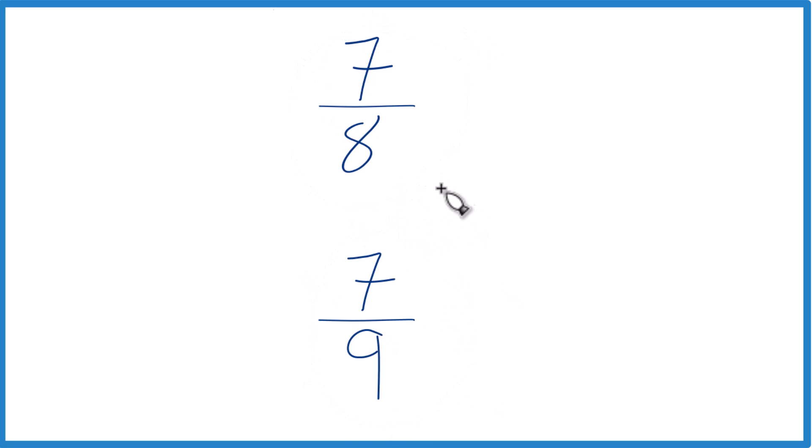You could just divide 7 by 8 on a calculator, get a decimal. Divide 7 by 9 on a calculator, get a decimal. And that would tell you if 7/8 was greater than, less than, or equal to 7/9. You might just be able to look at it and tell as well.